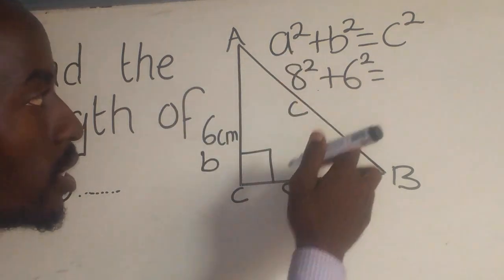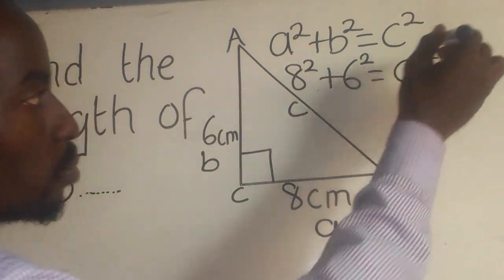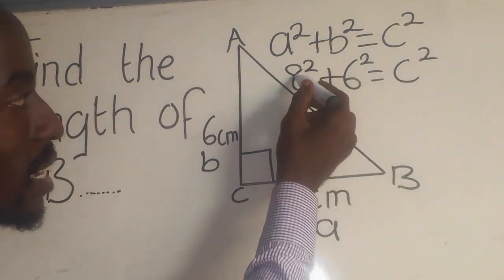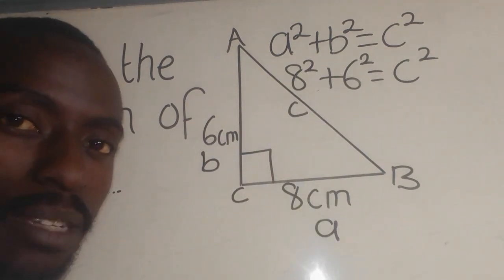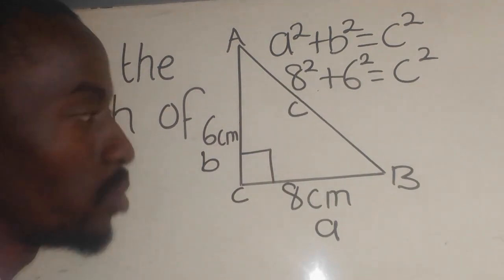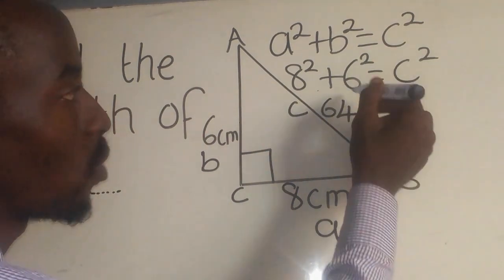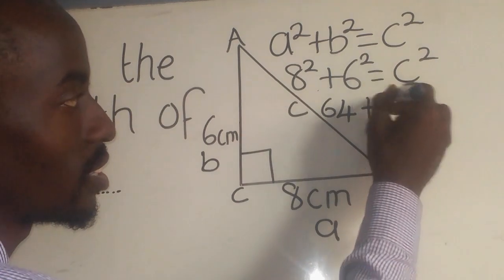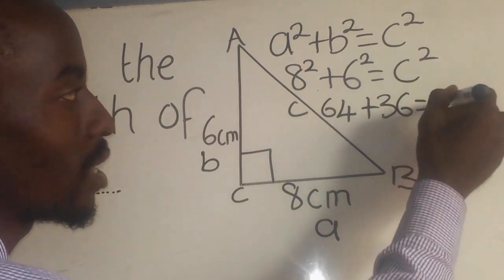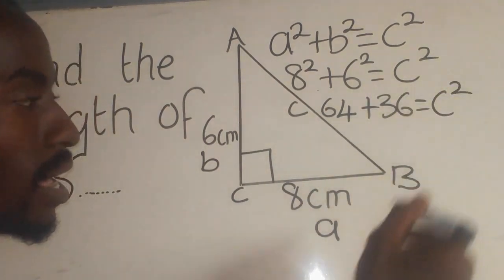Now what is 8²? 8² simply means 8 times 8, which will give me 64. Plus what is 6²? 6² is 36, equal to c². I hope you are following.